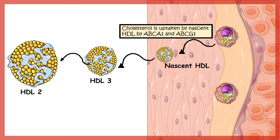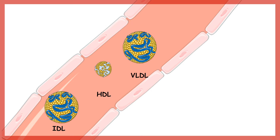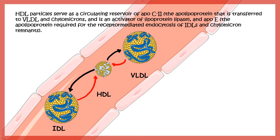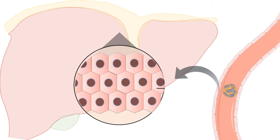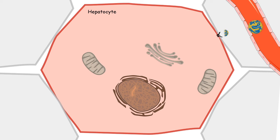HDL can also interact with VLDL and IDL particles — HDL donates proteins to them while VLDL and IDL give triglycerides to HDL. After taking triglycerides from VLDL and IDL, these particles can eventually become LDL. LDL can deposit cholesterol in tissues, or it can be taken up by the liver via LDL receptors on hepatocytes through receptor-mediated endocytosis. This means HDL indirectly favors cholesterol uptake by the liver through two pathways: via LDL particles or directly via the scavenger receptor on hepatocytes.